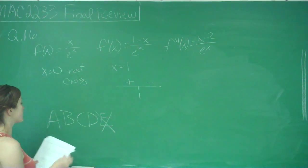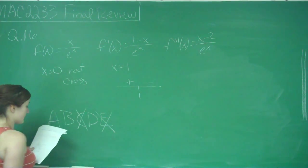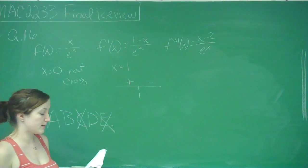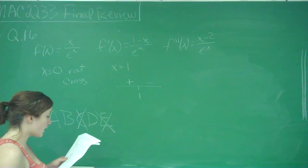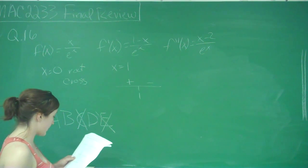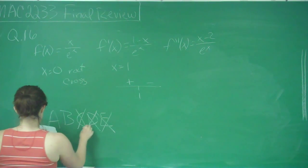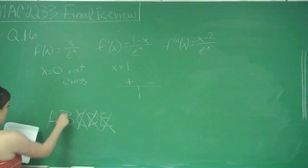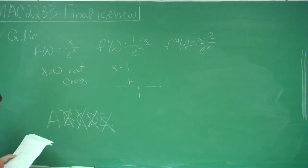We should have a relative max at x = 1, and only there. We can cancel out graph C because that has a relative max at 1 but also a relative min at negative 1, and we don't have that. We can cancel out D because that's also not an option. We can cancel out B because there's no max there. As you can see, it continues to go on and up towards positive infinity.